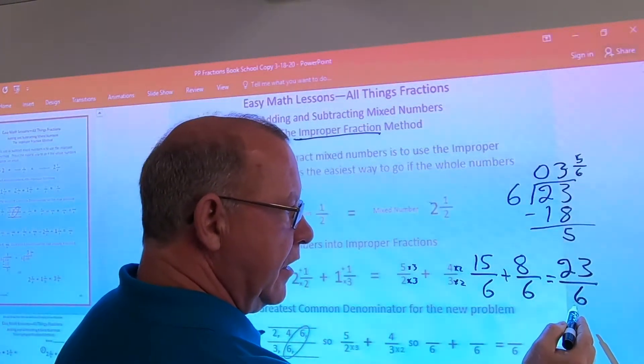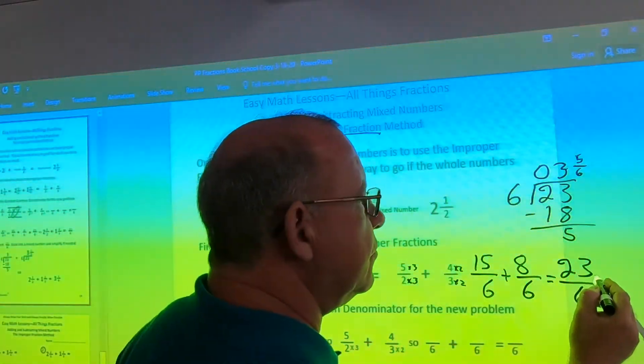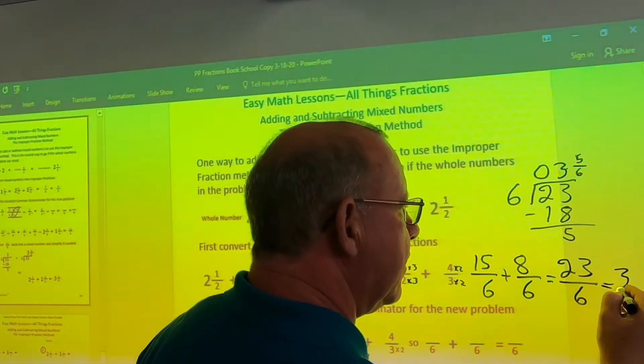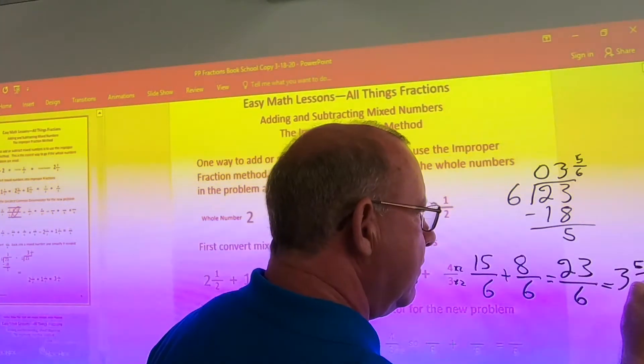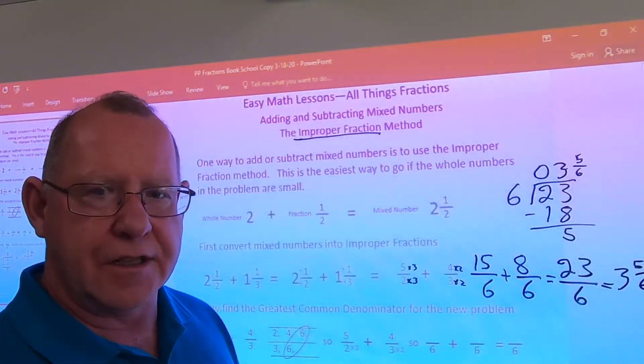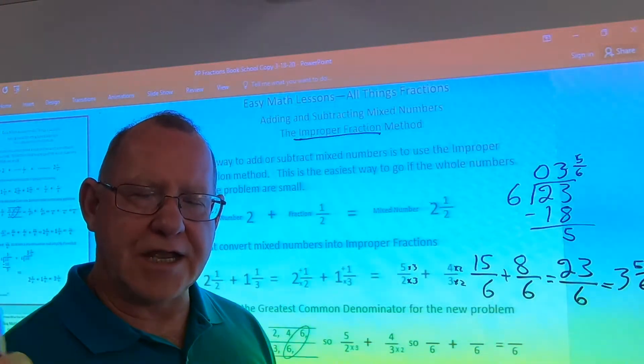I have a remainder of five over my denominator of six. So, 23 sixths is equal to three and five sixths. There we go. Several steps. You guys have a great day.